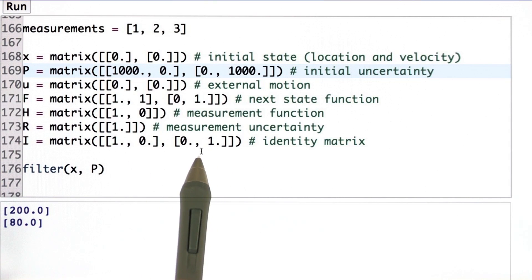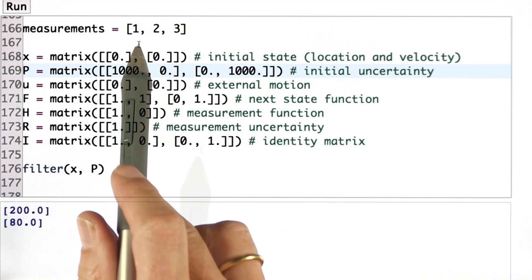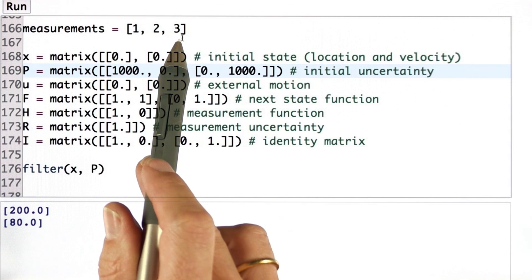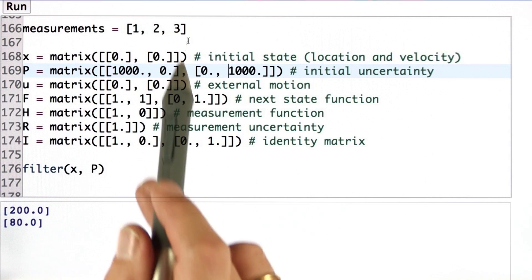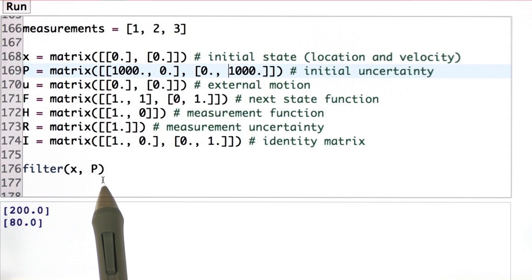And I have an identity matrix, 1, 0, 0, 1. And then I run a filter with these three measurements over here. And what should come out is that by running the filter, I can estimate the velocity and therefore make better predictions.